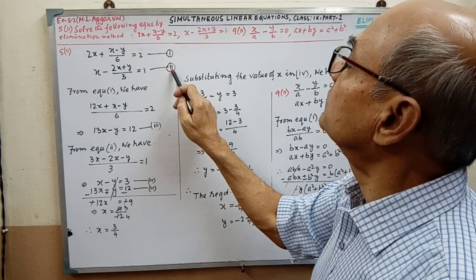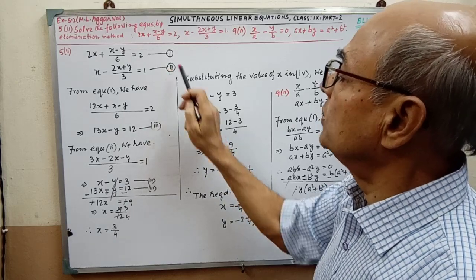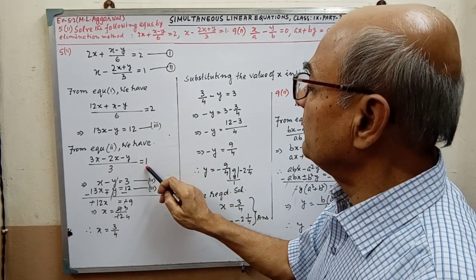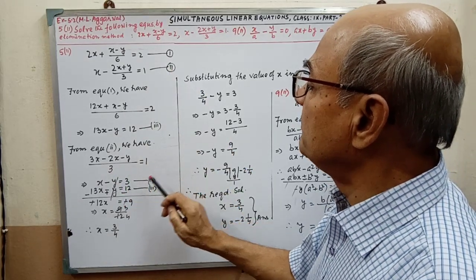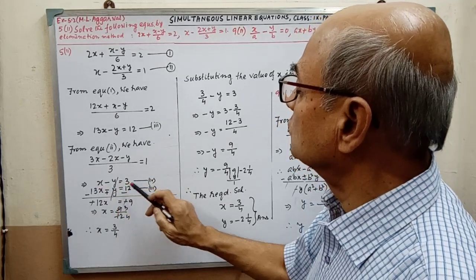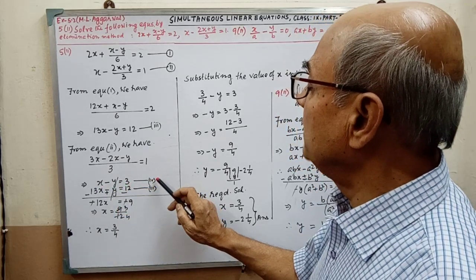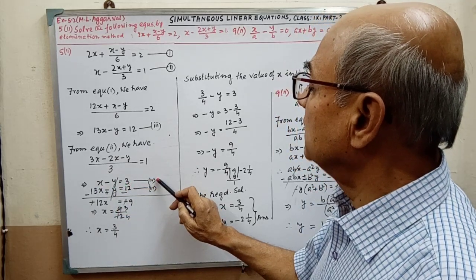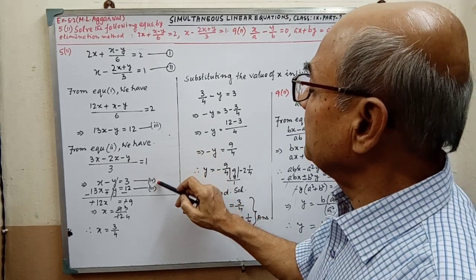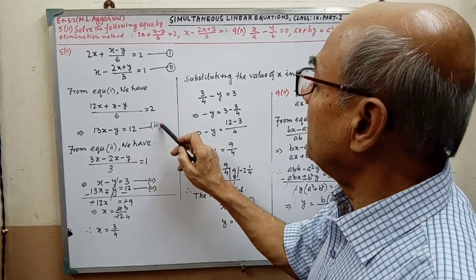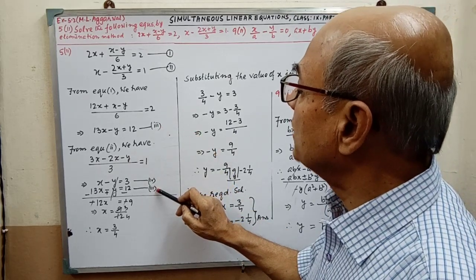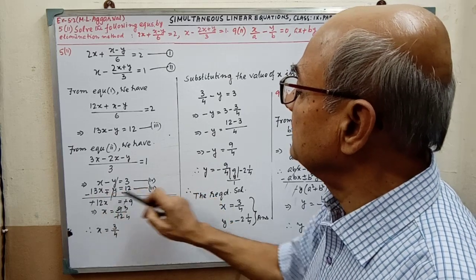And now from equation 2, this equation also we have to simplify. By simplifying this, we are getting x minus y equal to 3. Give the name — that is Part 4. And after getting Part 3 and Part 4, we have to write them together in this way.